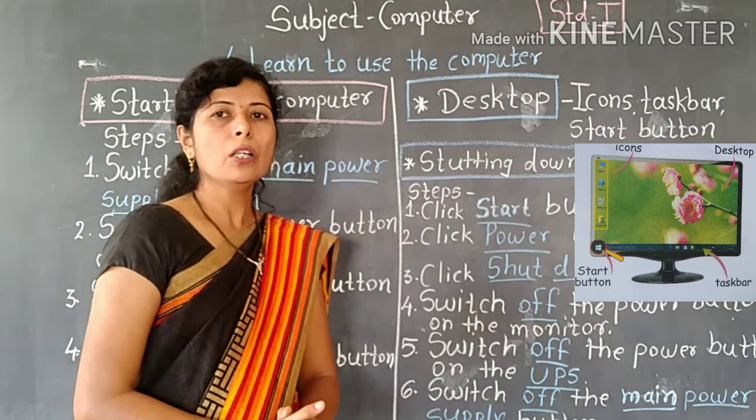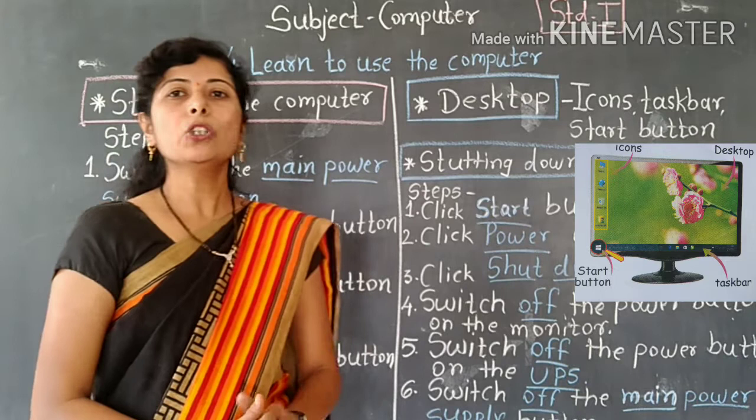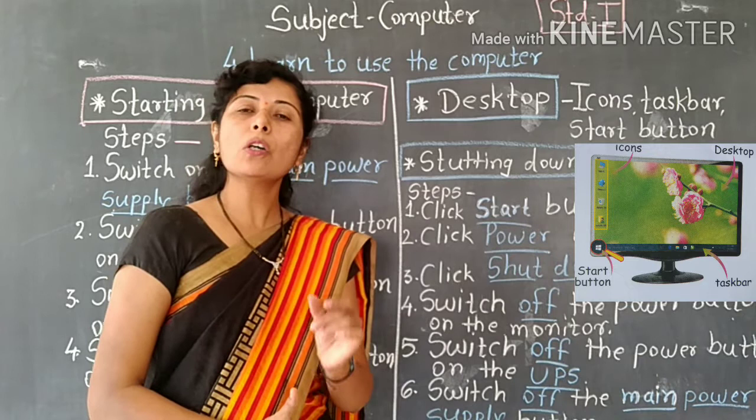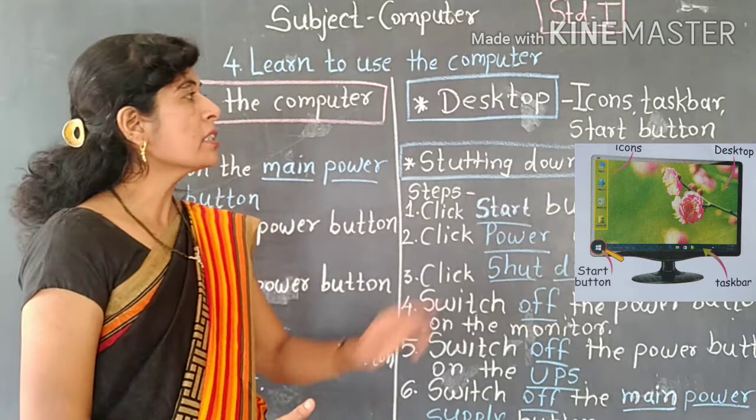The small pictures that appear on the desktop are called icons. These small pictures, shown as little squares on the left side, are listed on the desktop and are called icons.